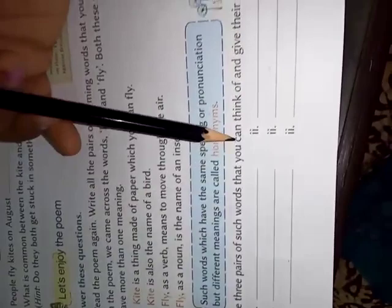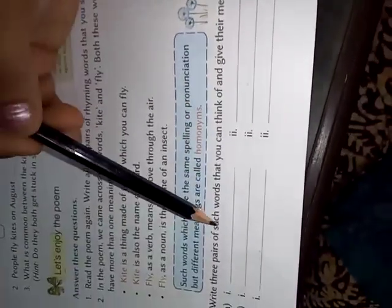Write three pairs of such words that you can think of and give their meanings. Hum yaha peh ab wo sare words likhenge joh similar spellings ho but uski meaning different ho. And this will be your homework students. Thanks all. And that's all for today. Thank you.